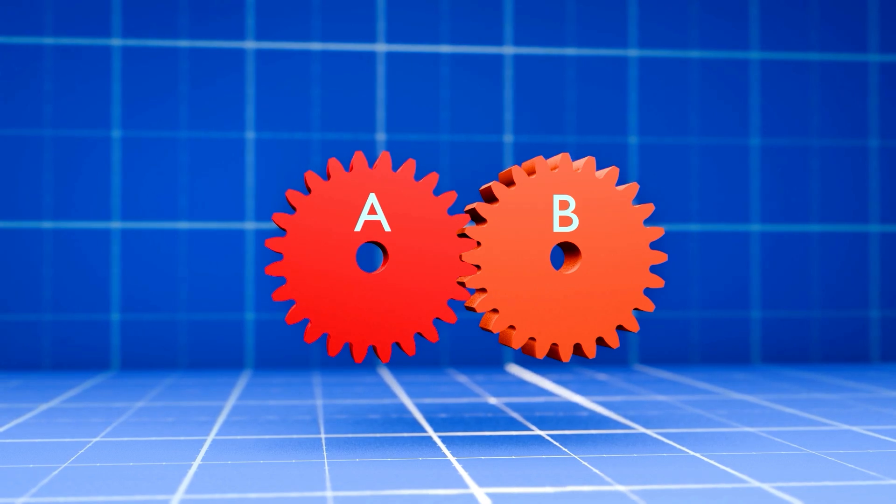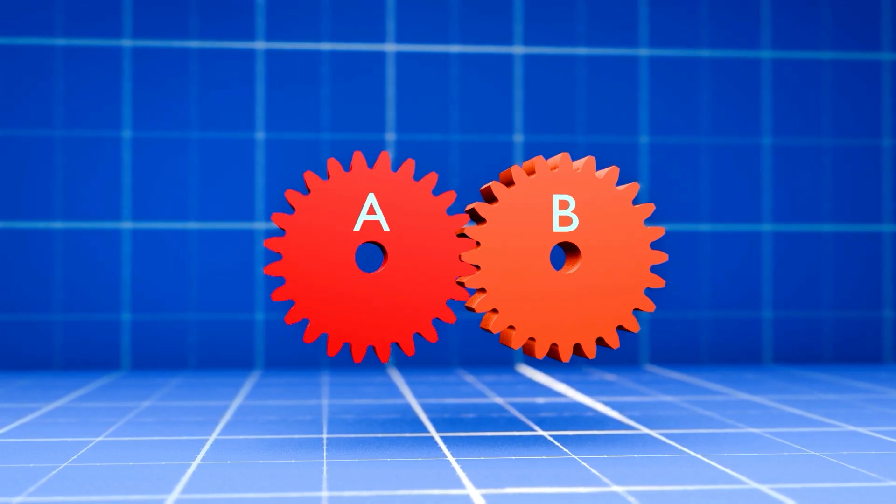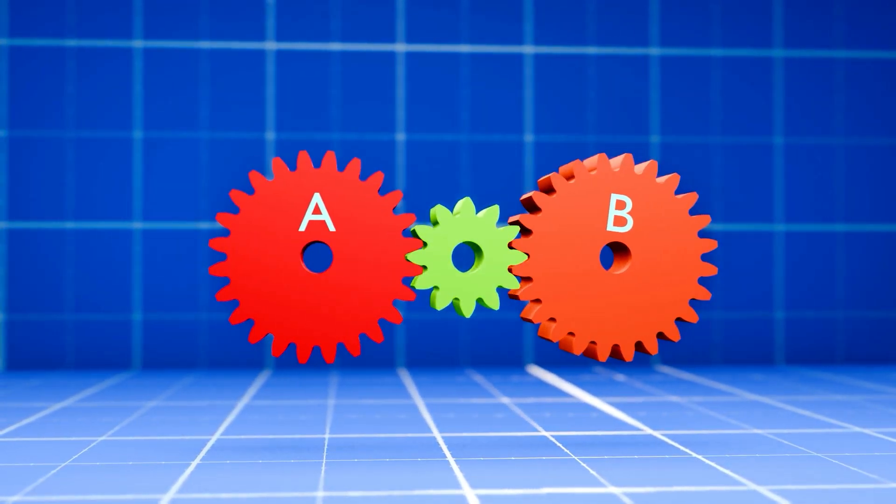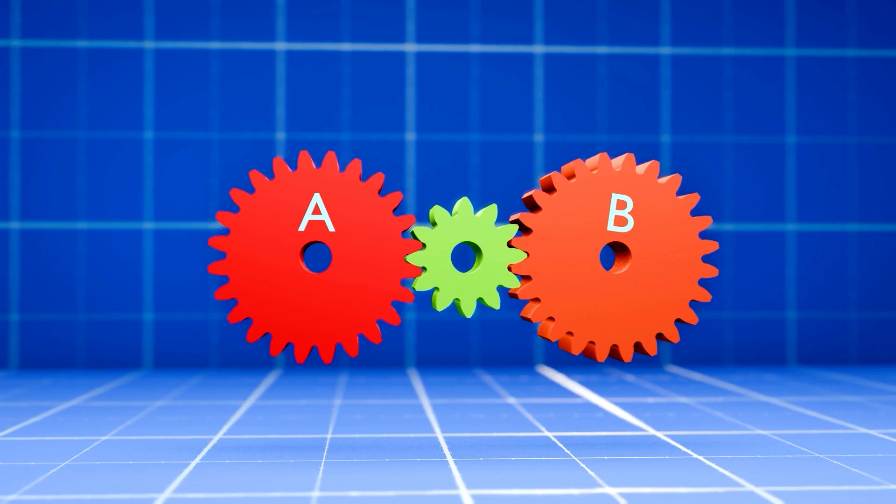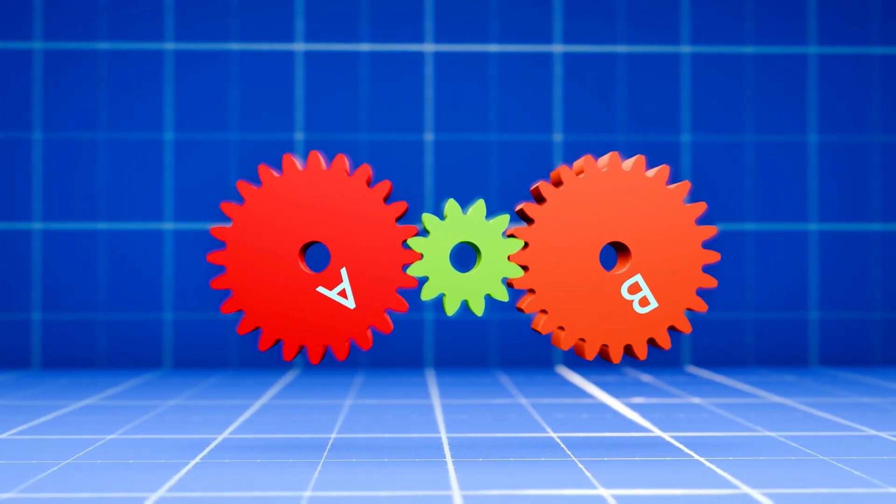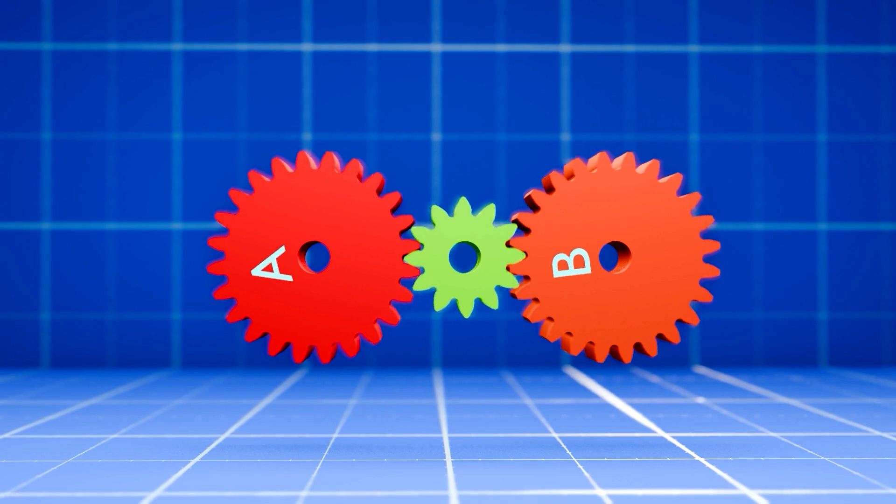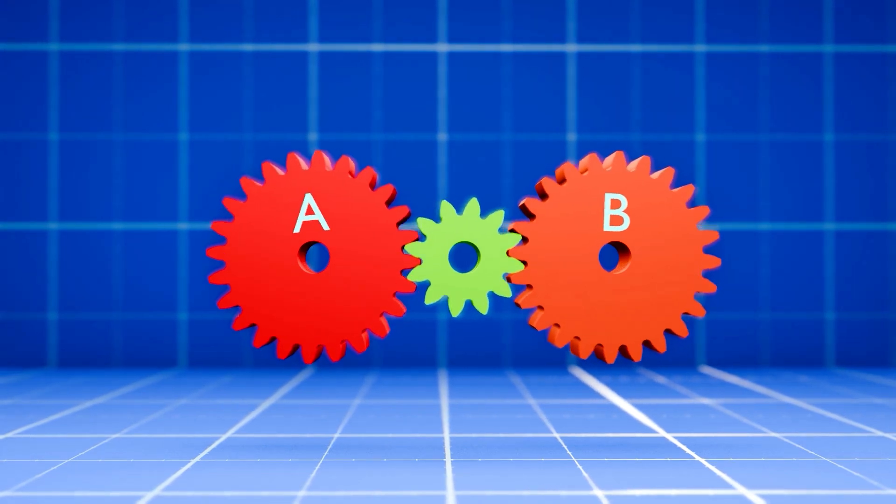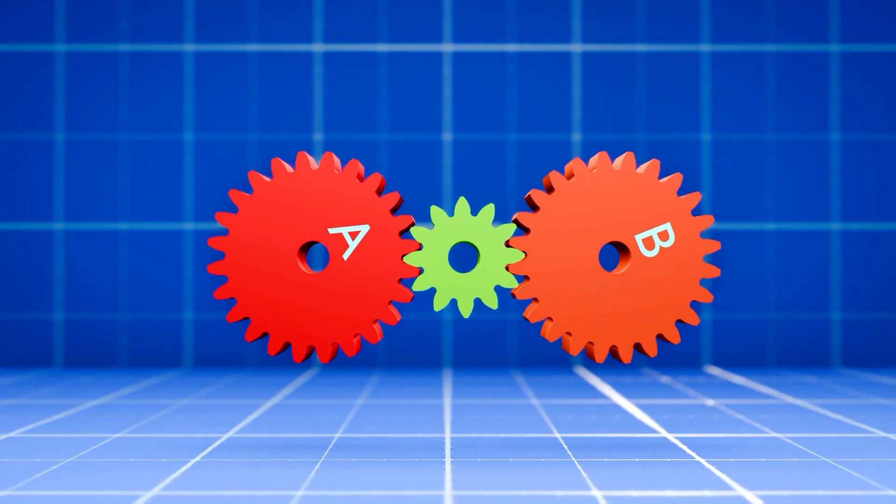But what if we want both gears to turn in the same direction? We can add a third gear, known as an idle gear, between the two. This idle gear ensures that gear B turns in the same direction as gear A. This method works well when the gears' axes of rotation are parallel to each other.